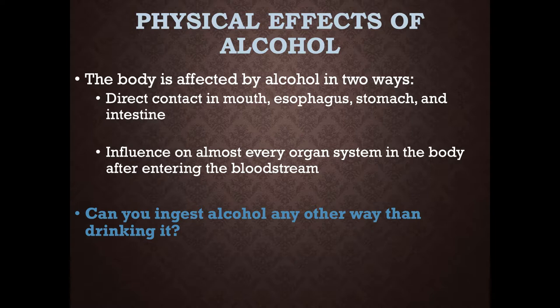Once we swallow alcohol, it goes into our stomach and digestive system. The alcohol makes its way through the lining of our stomach and into our intestines, then into our bloodstream. Pretty much any piece of tissue that alcohol touches, it will start to pass through. Once it's in our bloodstream, alcohol affects nearly every single part of us. Our liver starts to metabolize it, our brain function starts to decrease, and our heartbeat starts to slow just a little bit.